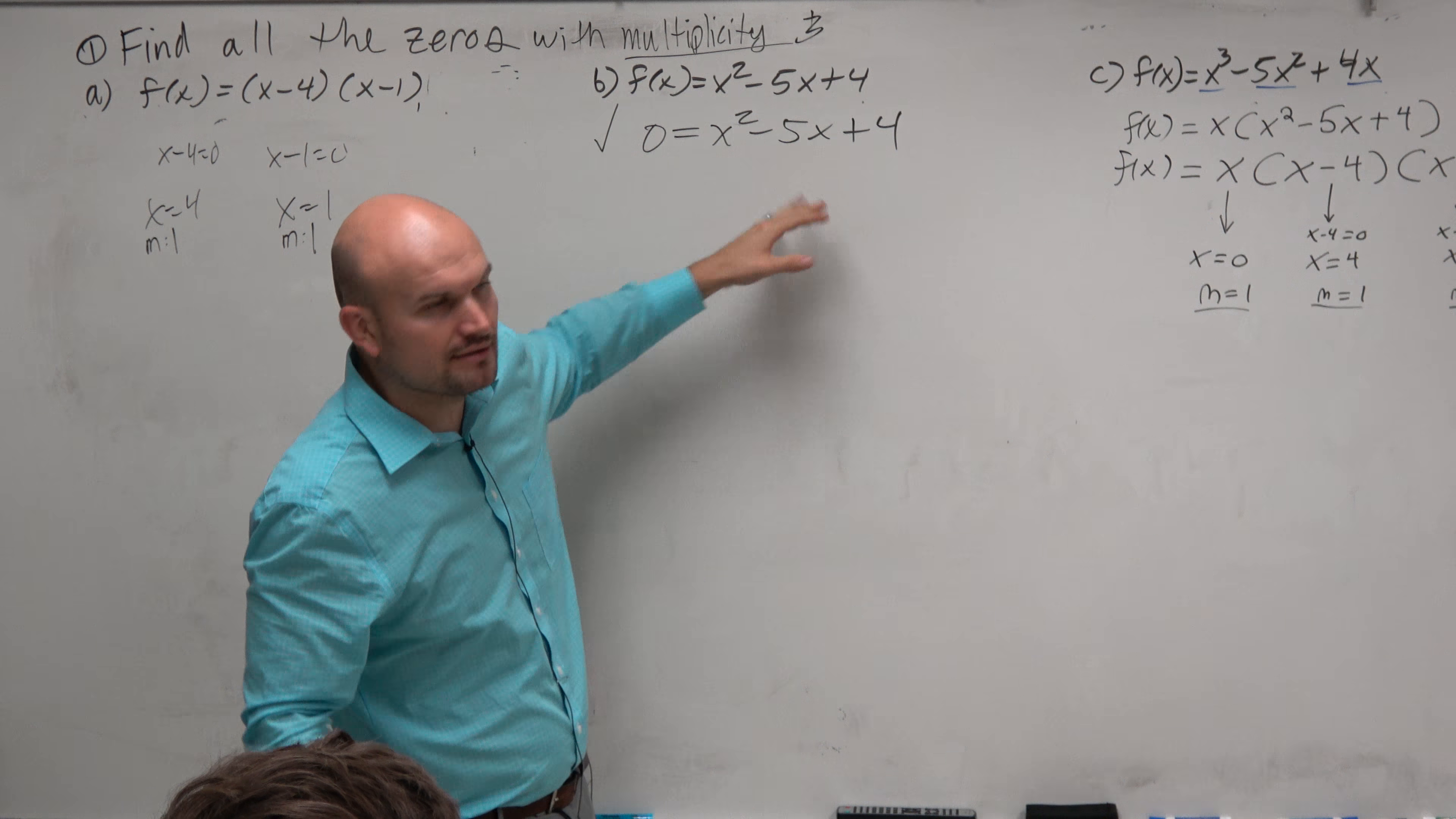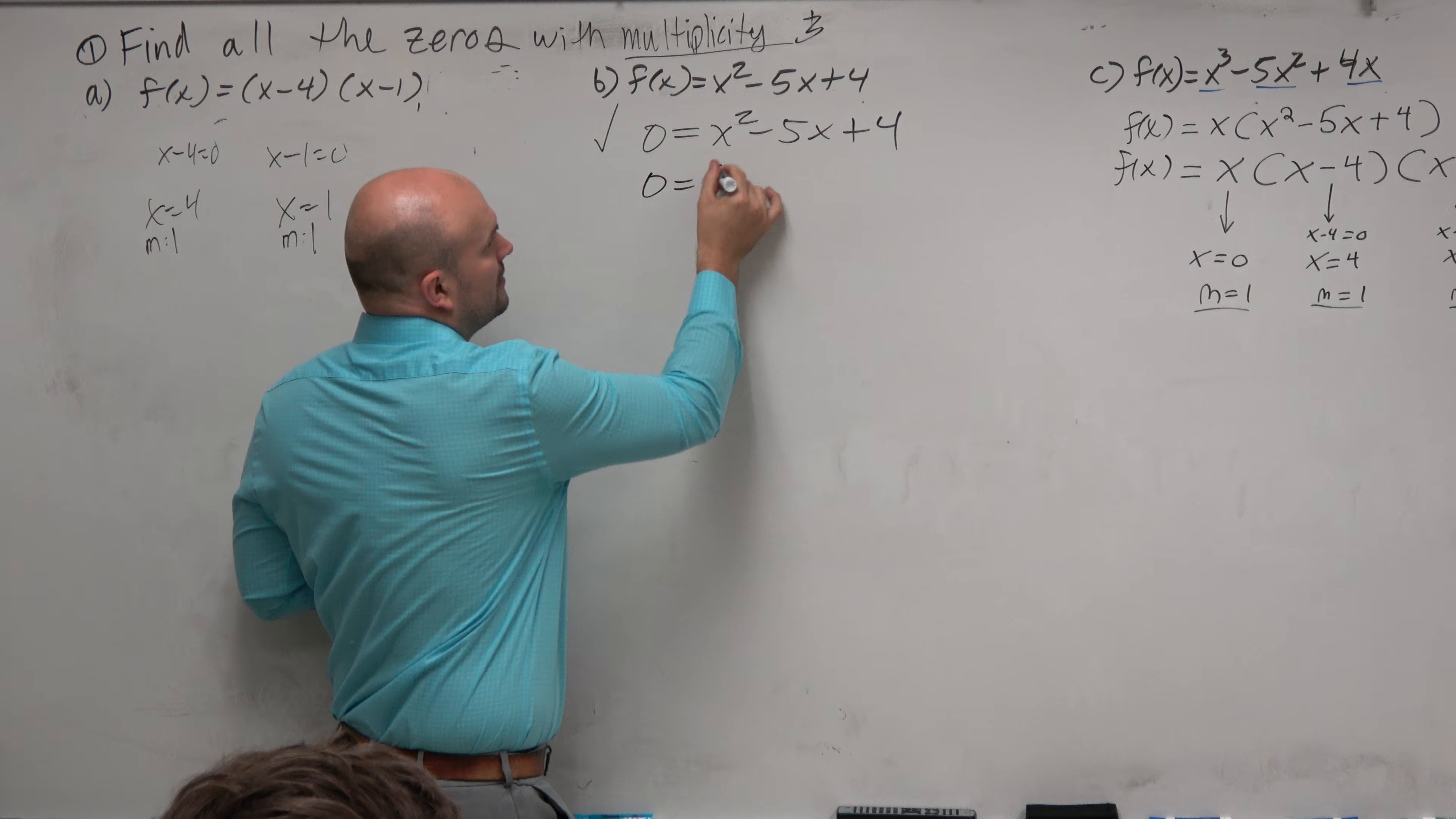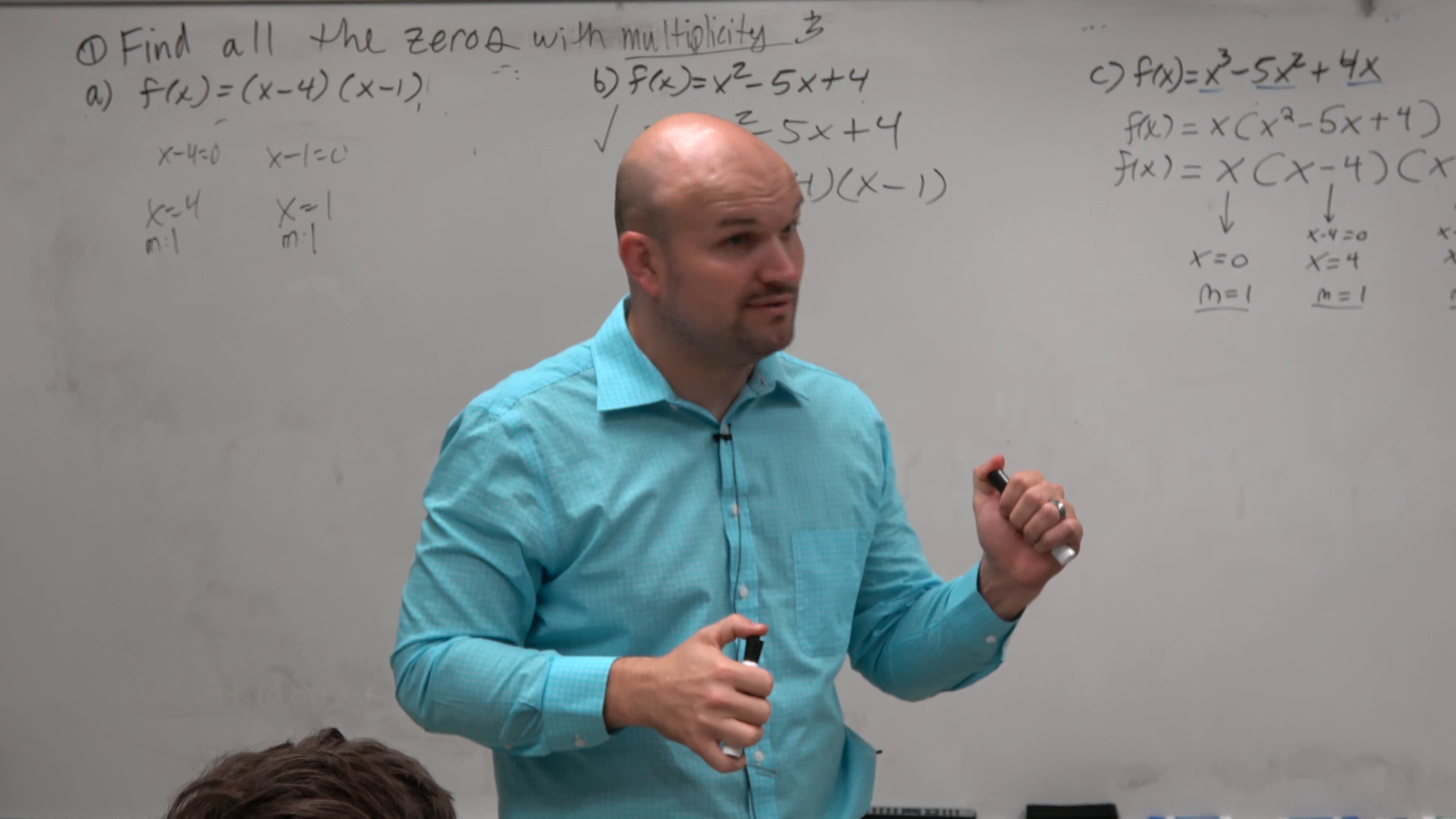Well, now, obviously, this is a quadratic. And so we can figure out what two numbers multiply to give you 4, add to give you negative 5. Because by this time, you should be able to blink your eyes and be able to know that factoring.